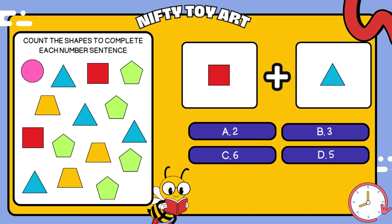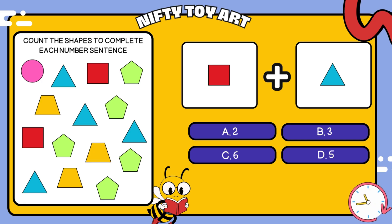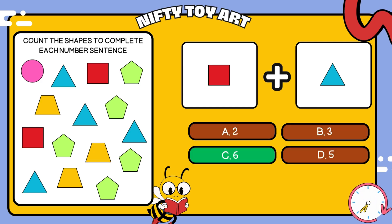I have a square plus triangle. How many all together? That's right, six.